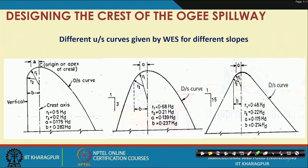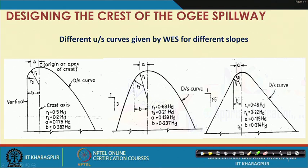For the 1 horizontal to 3 vertical slope: r1 is 0.68 H_d, r2 is 0.21 H_d, a is 0.139 H_d, and b is 0.237 H_d. For the 1 horizontal to 1.5 vertical slope: r1 is 0.48 H_d, r2 is 0.22 H_d, a is 0.115 H_d, and b is 0.214 H_d. These are the different shapes and corresponding dimensions of the Ogee spillway crest profile.